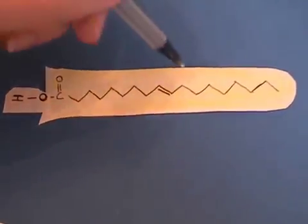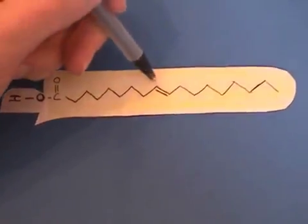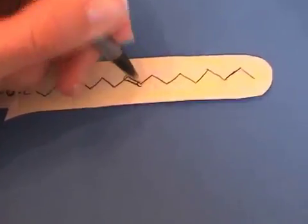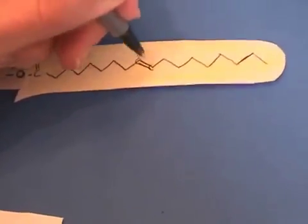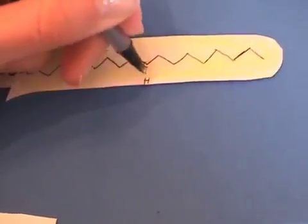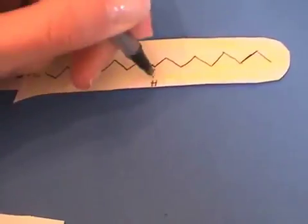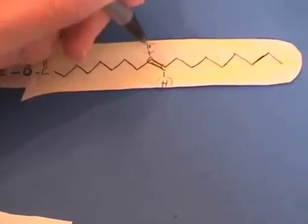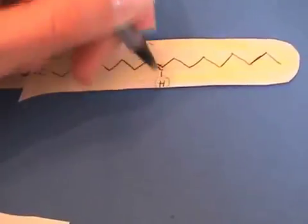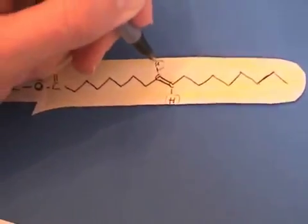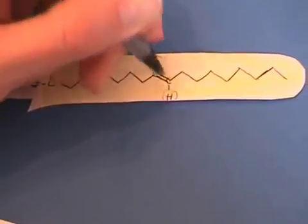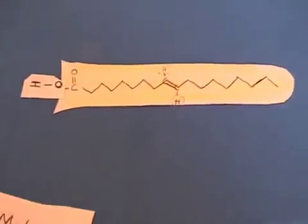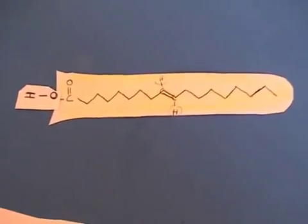And is it cis or is it trans? Remember that each vertex just represents a carbon. The hydrogens go where there is space for that hydrogen to go. We see that this hydrogen is opposite this hydrogen. Since they are on opposite sides, this is a trans unsaturated fatty acid.